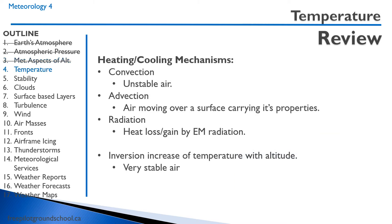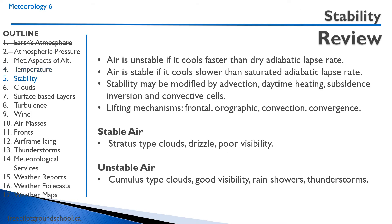Regarding heating and cooling mechanisms: convection results in unstable air; advection is air moving over a surface carrying its properties; radiation is heat loss or gain by electromagnetic radiation. An inversion is an increase of temperature with altitude, characteristic of very stable air. Air is unstable if it cools faster than the dry adiabatic lapse rate of 3 degrees per thousand feet. Air is stable if it cools slower than the saturated adiabatic lapse rate of 1.5 degrees per thousand feet. Stability is modified by advection, daytime heating, subsidence, inversion, and convective cells.